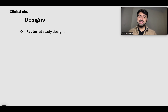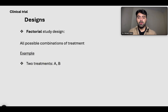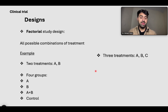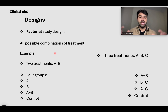Now let's talk about factorial study design. Factorial study design tries out all possible combinations of treatments. For example, if you have two treatments — Treatment A and Treatment B — you make four groups: one that receives only Drug A, one that receives only B, one that receives both A and B, and the control group. If you have three treatments A, B, and C and want to give two drugs at once, you make all possible combinations: A+B, B+C, and A+C, plus the control group.